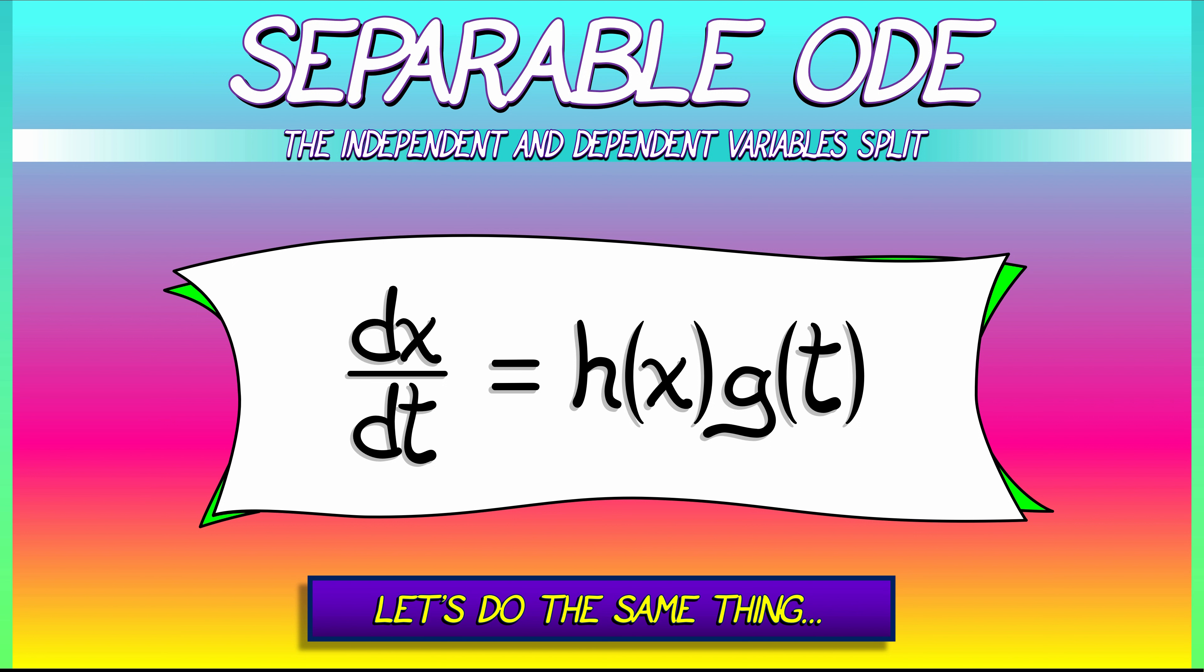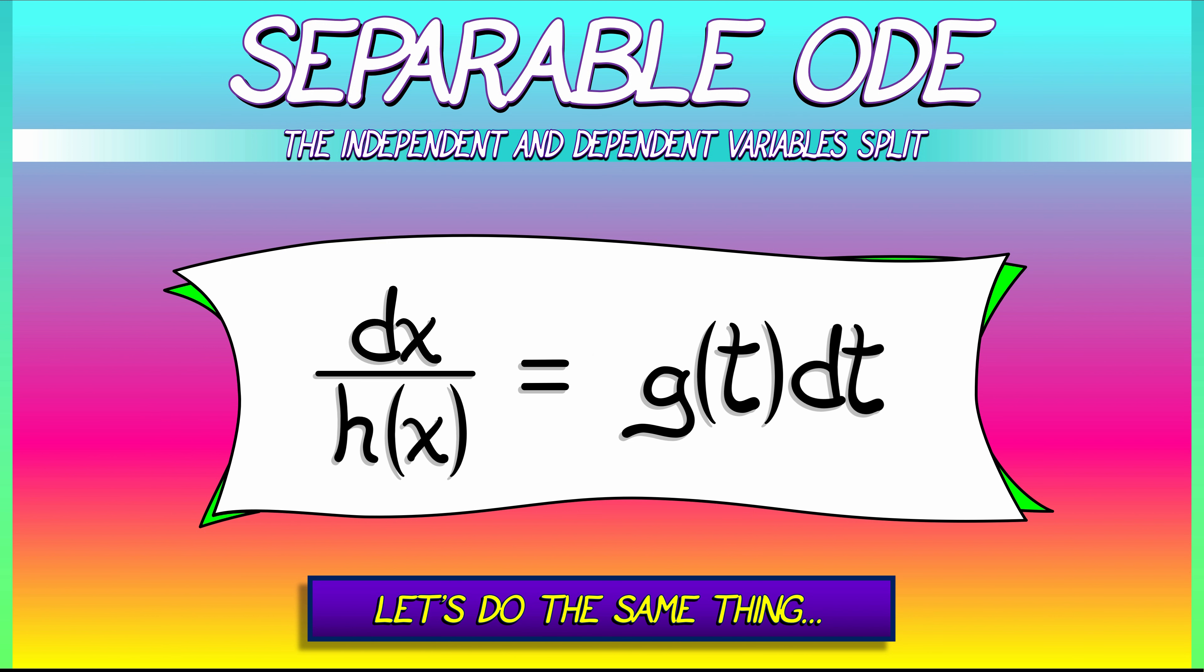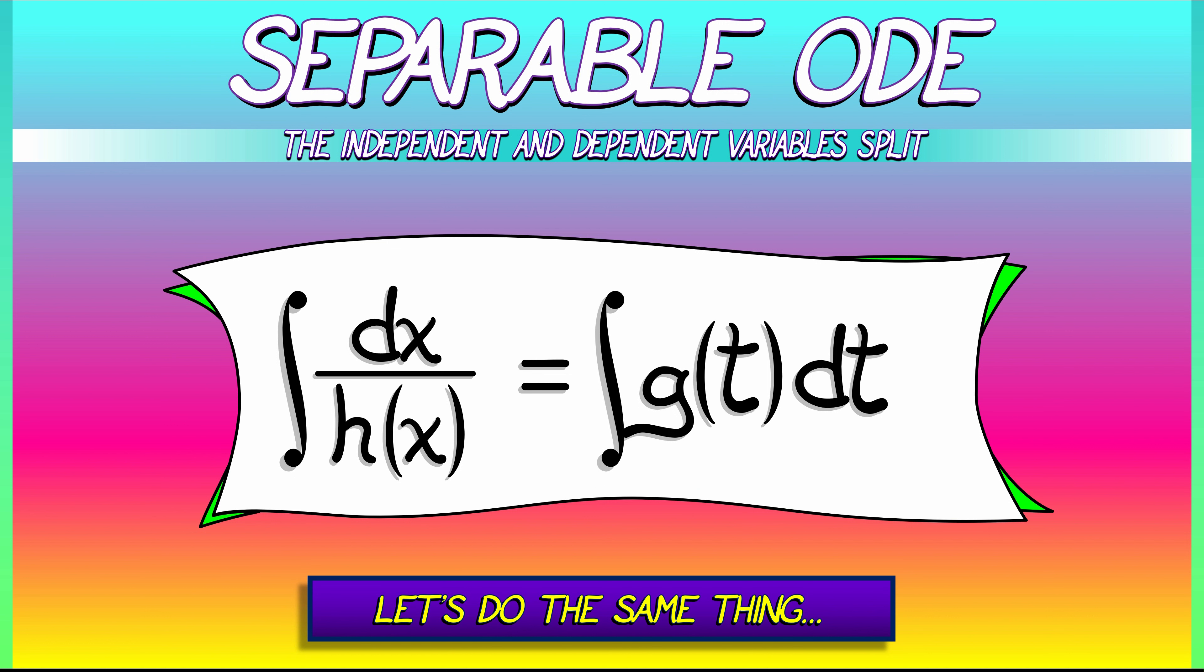Our right-hand side is h of x times g of t. Now, this equation is separable, so we're going to separate out the two terms, multiplying through by dt, dividing through by h of x, and then integrating both sides. We have on the left the integral of dx divided by h of x, on the right, the integral of g of t dt. Do those integrals, solve for x as a function of t, and then you're done—hopefully.